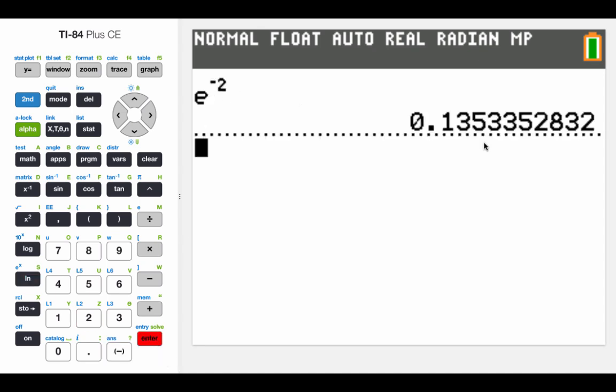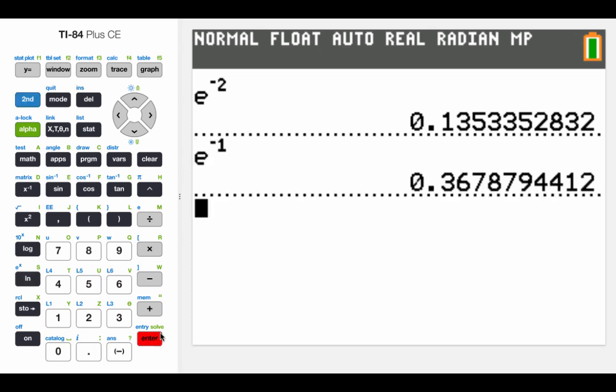So if we go e to the negative second power, I'm going to get 0.135 approximately. If we go second ln and use that negative 1 power, we get 0.368 if we round it off. And the last one we said we were going to plug in was 0.25. So I plug that in, hit enter, and I get 1.284 if we round that one off.